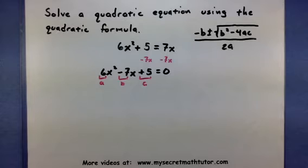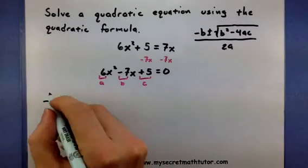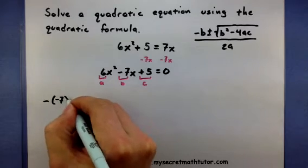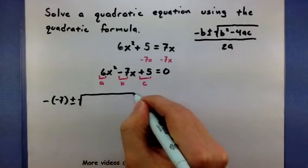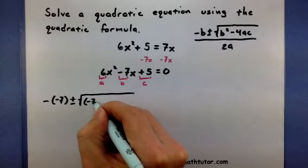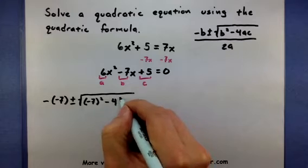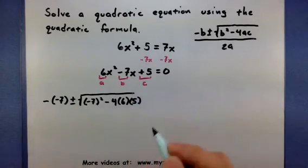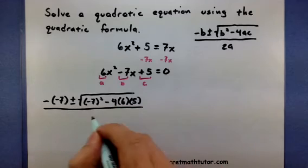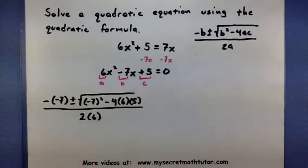Let's take all of those values and plug them into the formula. So I want a negative, negative 7, plus or minus the square root of negative 7 squared minus 4 times 6 times 5, all over 2 times 6.